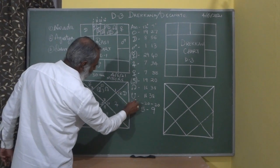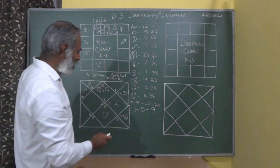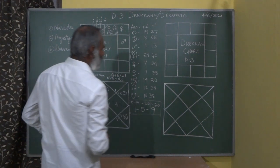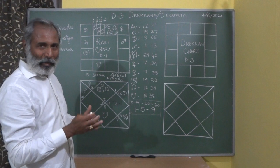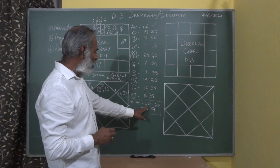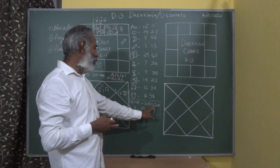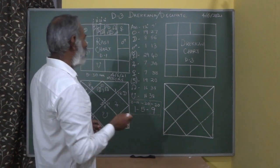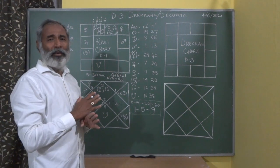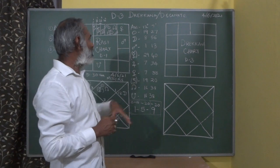The first Drakana of any house will fall in itself. If any planet is present within 0 to 10 degrees in Aries, it will fall in Aries itself. If any planet is between 10 to 20 degrees, it will fall in Leo, the fifth from it. The plotting is 1-5-9. That is 0 to 10 degrees in the same Rashi, making it Vargottama.